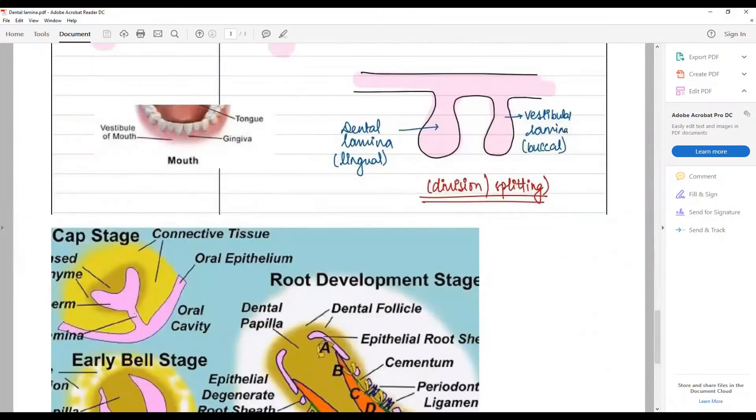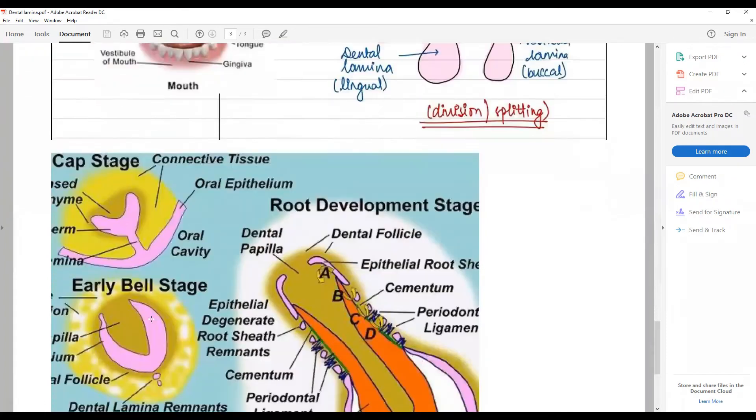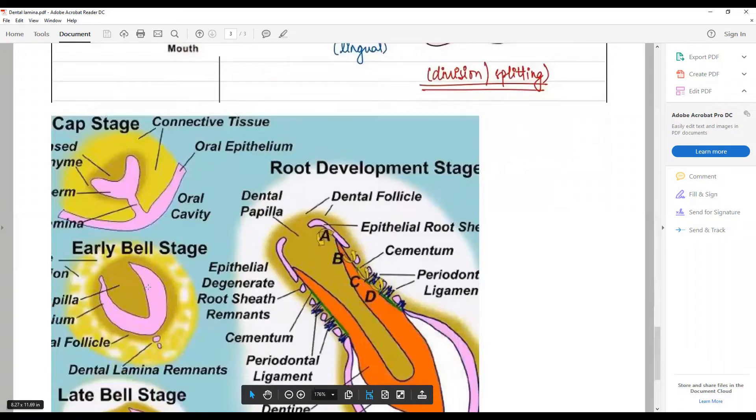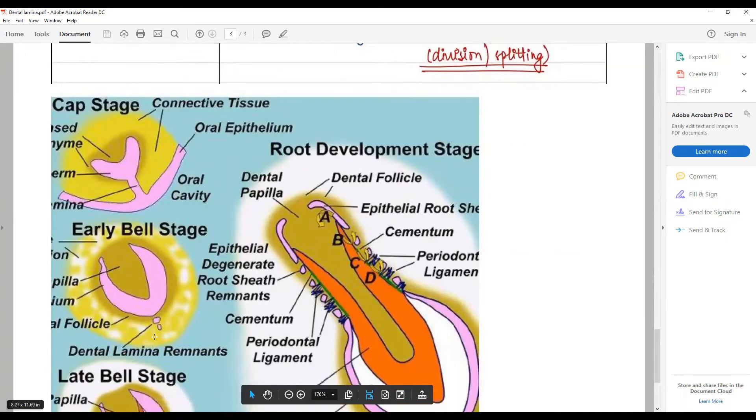At this stage, the cap stage, the dental lamina extends into the cap stage. And at the early bell stage, it starts to disintegrate. Rather, at this stage, at the early bell stage, there is evidence of the dental lamina starting to disintegrate.